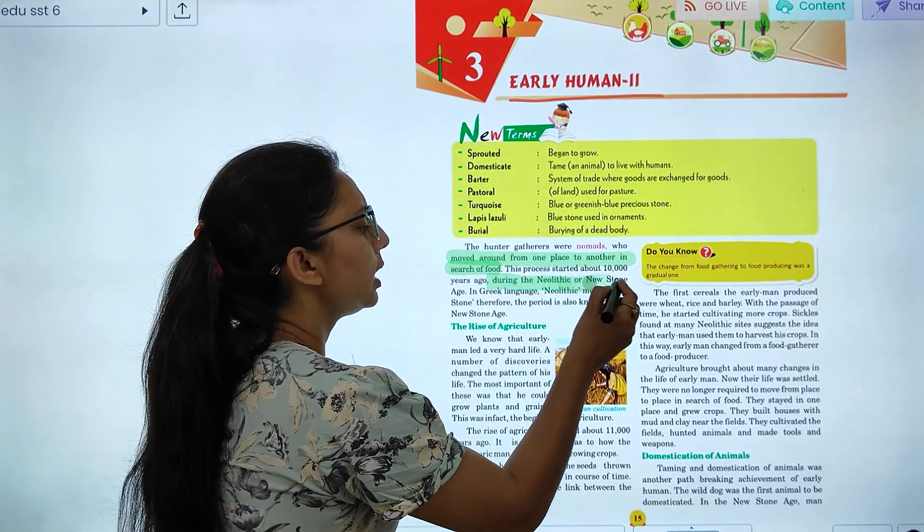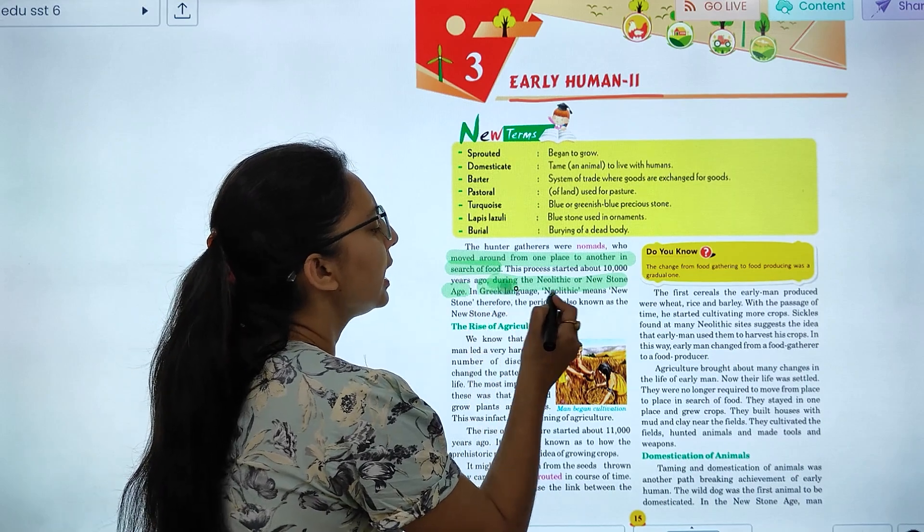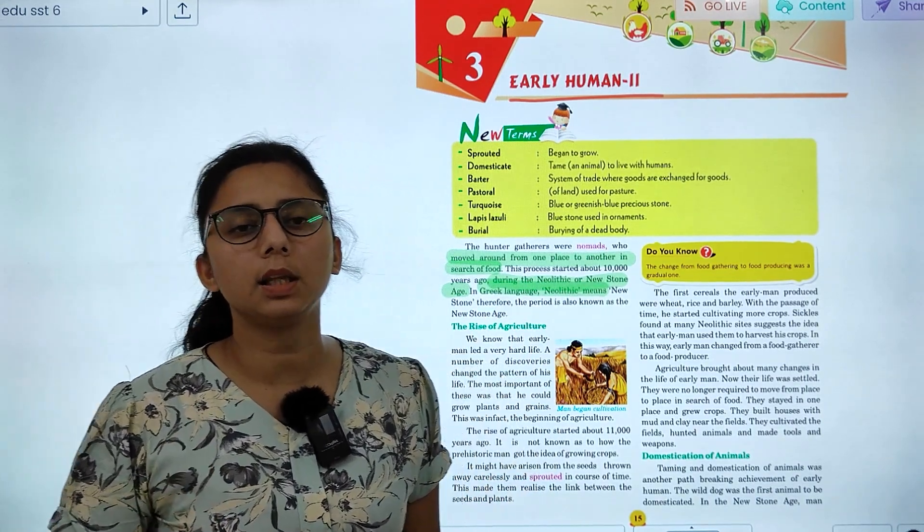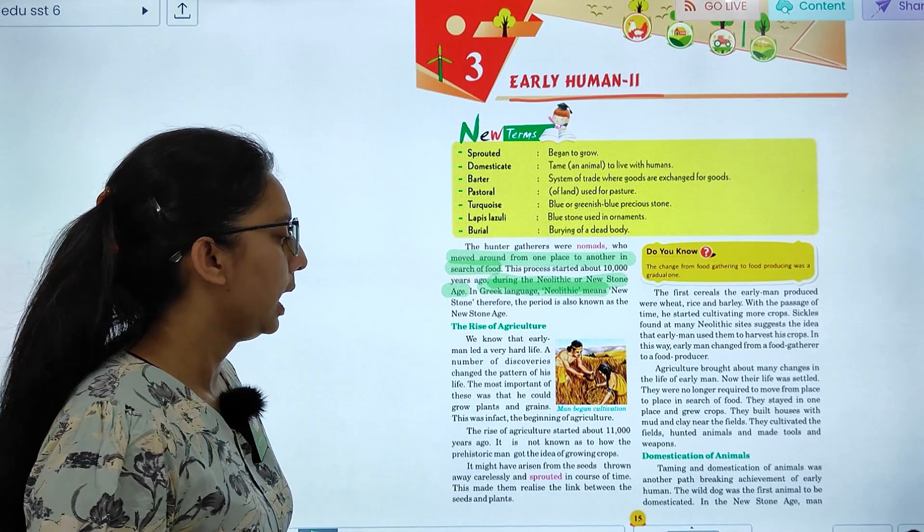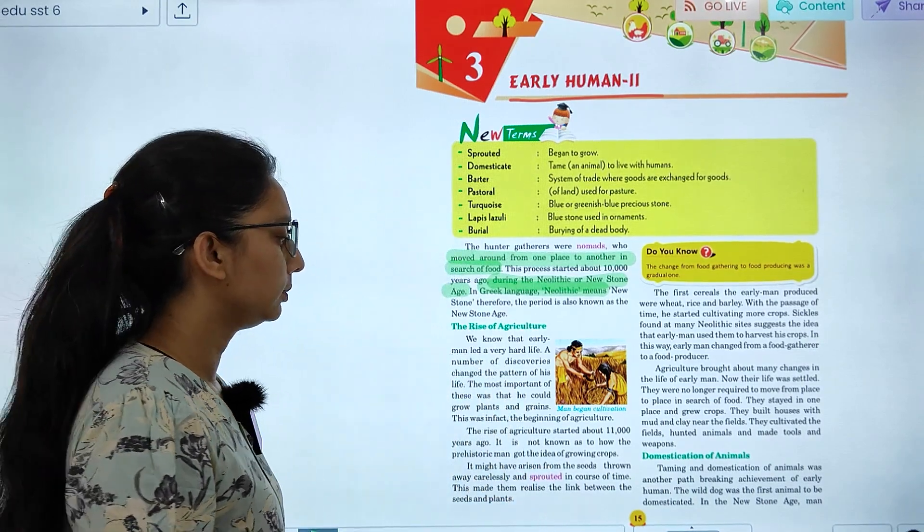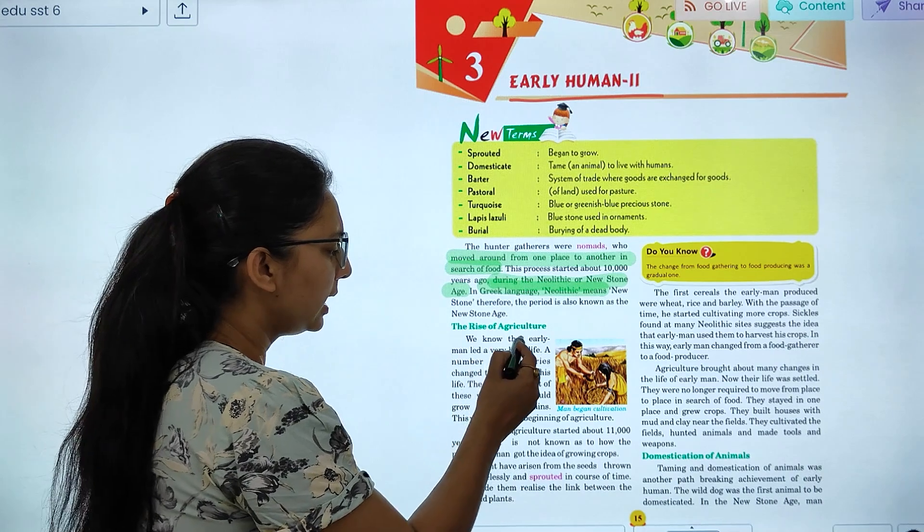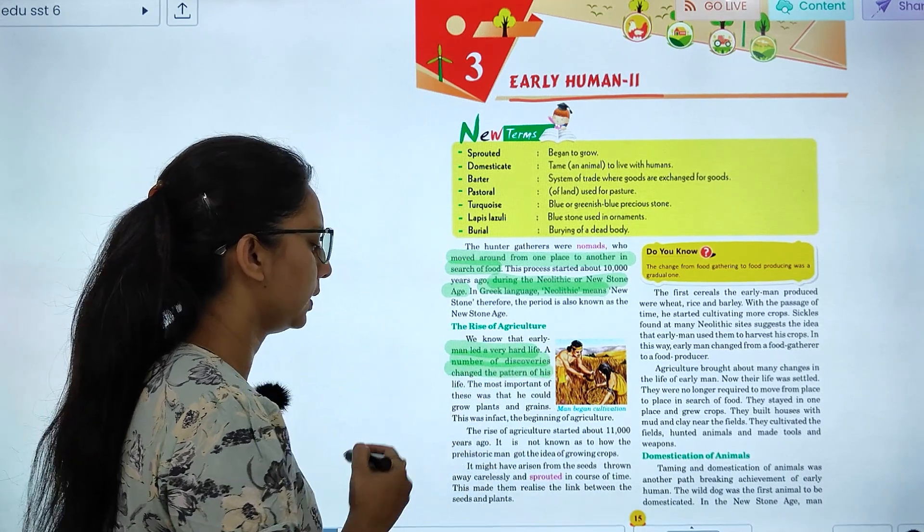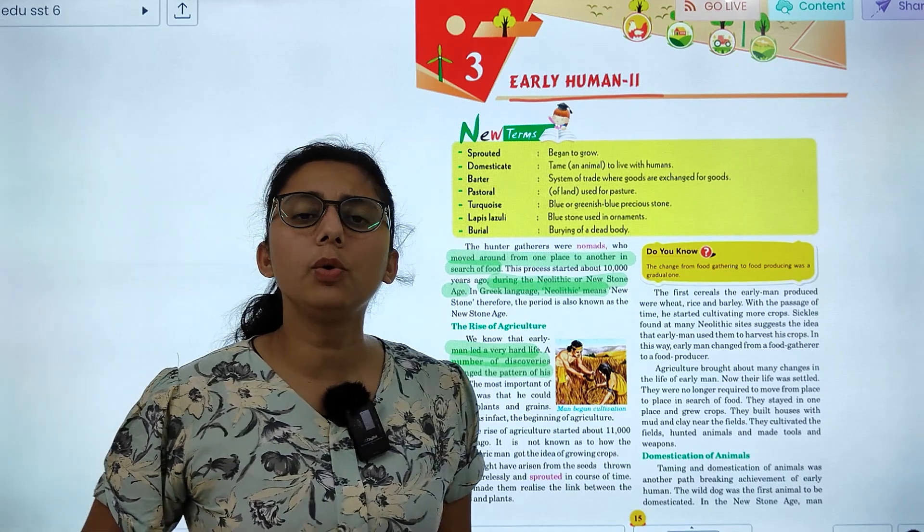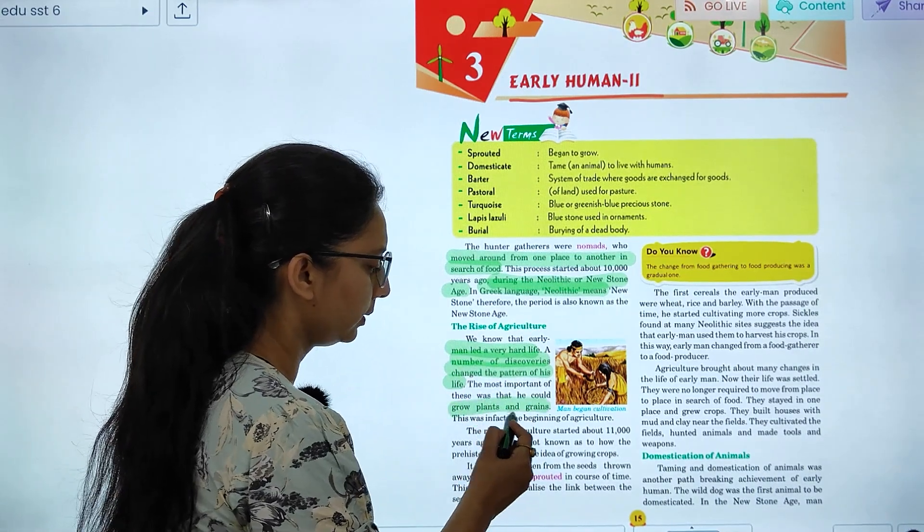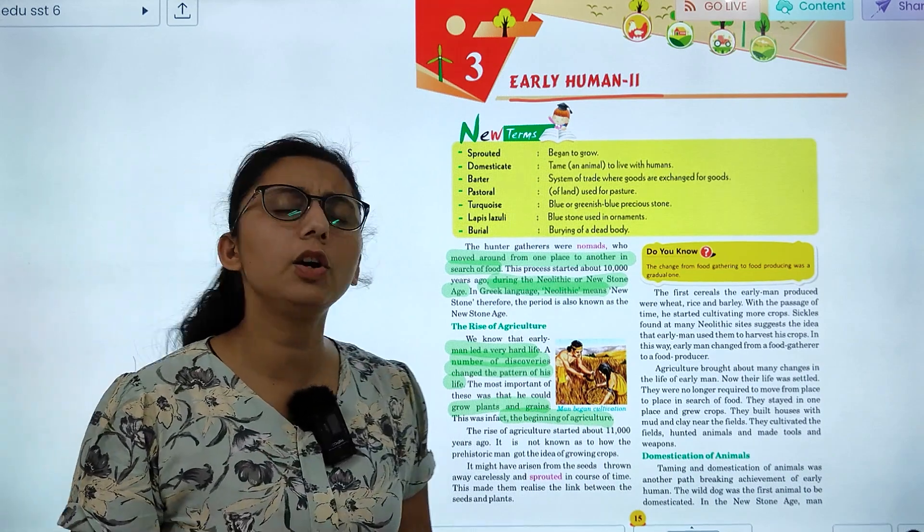During the Neolithic or Stone Age, in Greek language, Neolithic is called New Stone Age. What is popularly called New Stone Age. What happened here? The rise of agriculture. We know that early man led a very hard life. A number of discoveries changed the pattern of his life. What was the most important thing? To learn how to grow crops, how to grow plants. The beginning of agriculture.